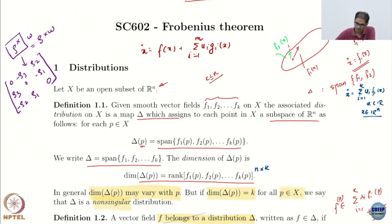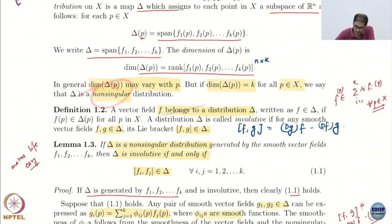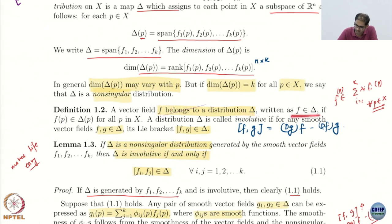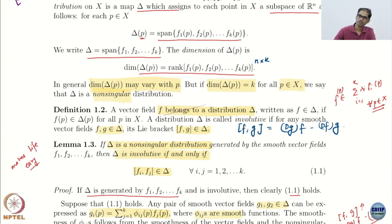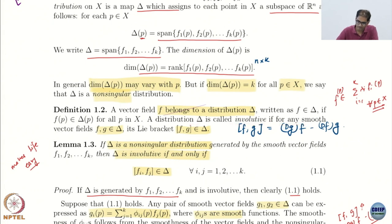That is the motivation for talking about distributions and non-singular distributions. We say a vector field belongs to a distribution — written as f in delta — if f(p) belongs to delta(p) for all p. A distribution is said to be involutive if any two vector fields belonging to the distribution implies that their Lie bracket also belongs to the distribution.